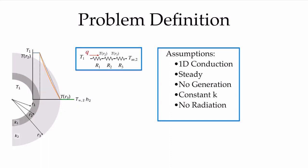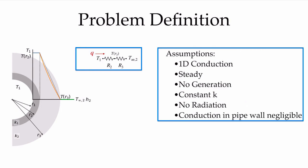The problem is that of a pipe which will be carrying a fluid at a different temperature than the ambient conditions, which will be subject to a convection coefficient at an ambient temperature. We're going to assume that the pipe is highly conductive compared to the insulation material that we would put on it, such that there will be very little temperature drop throughout the pipe material. From our resistance network, we have a conduction resistance through the pipe, a conduction resistance through the insulation, and then a convection resistance to the ambient. We're going to assume that the conduction in the pipe wall is negligible.